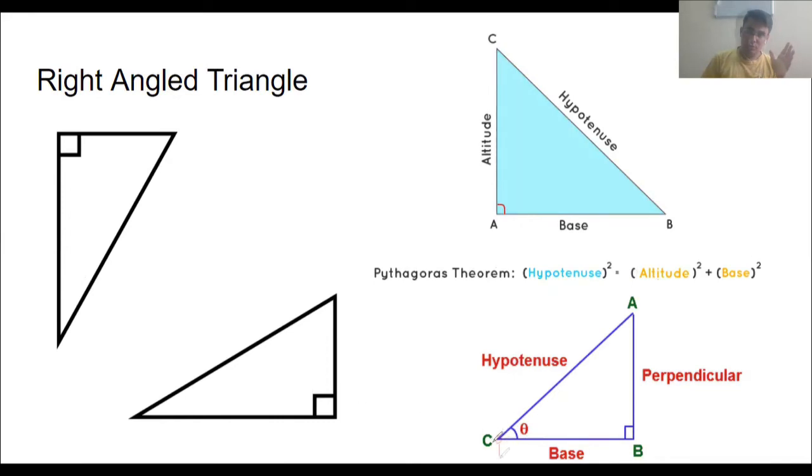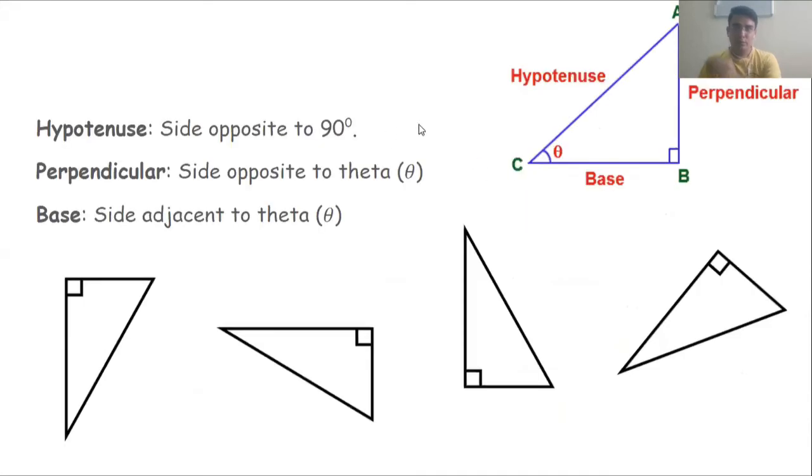Now if you go back to our original example, you were standing here and you were looking at the top of the tree. So you were forming an angle. In this chapter we call that angle as theta. What do we call? Theta. Theta is nothing but a Greek letter used to represent angle. So theta is nothing but an angle.